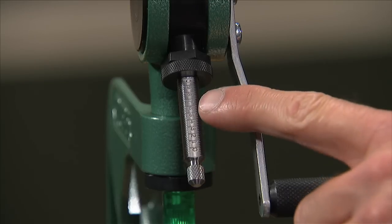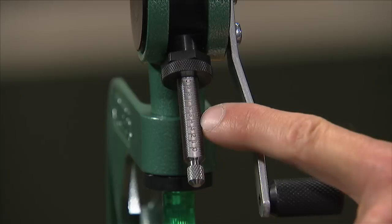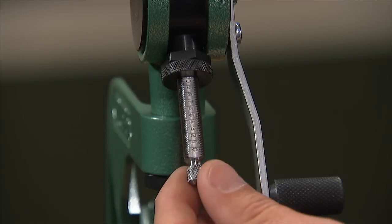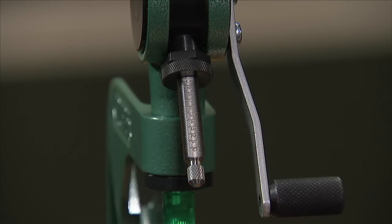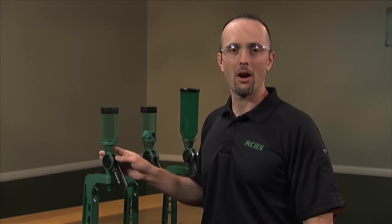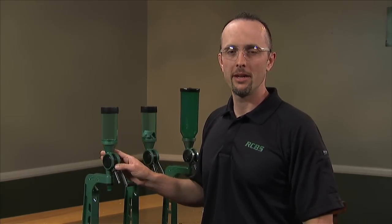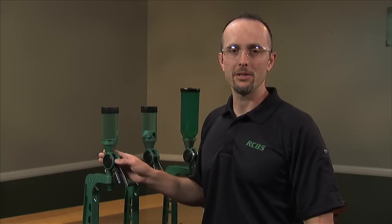The metering screw is inscribed with numbers for a visual reference to make cartridge changeover quick and easy. The Uniflow powder measure comes standard with a large cylinder and metering screw assembly, which is great for most applications.